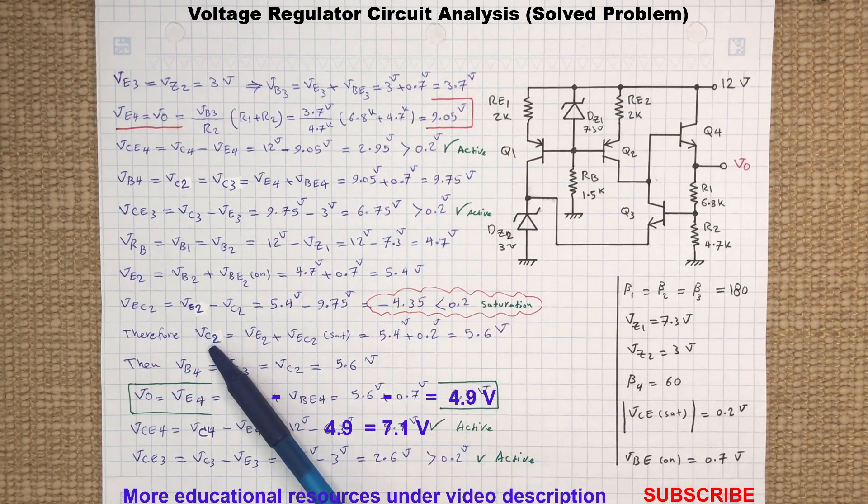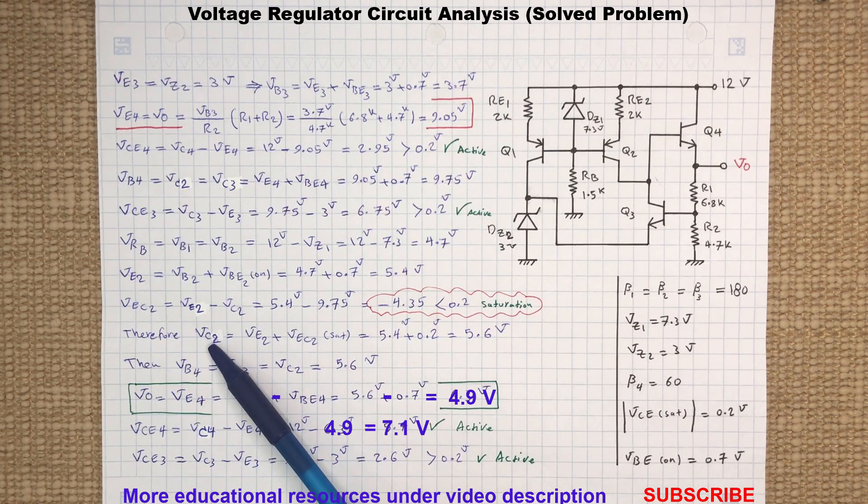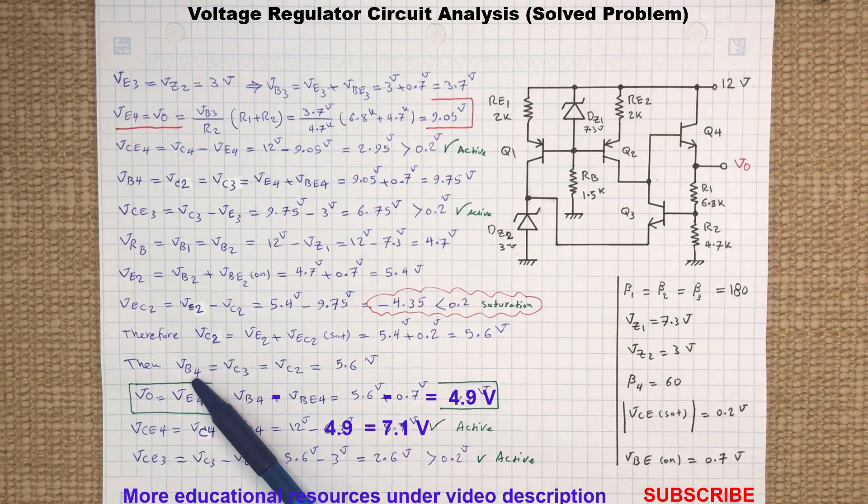By knowing Q2 is in saturation region, we can determine the actual voltage at the collector of Q2 by adding the emitter voltage to the emitter-collector saturation voltage. The base of Q4 and the collector of Q3 are at the same node as collector of Q2. Therefore, all of them are at the same potential, which is 5.6 volts.